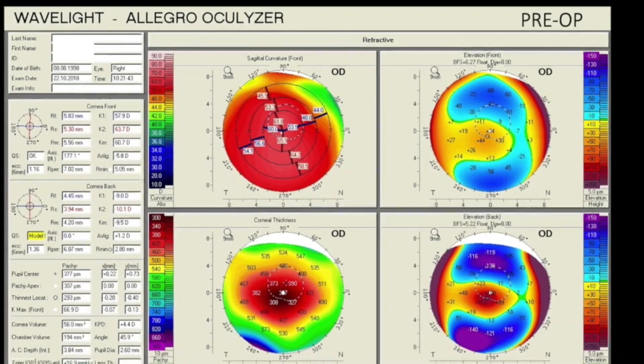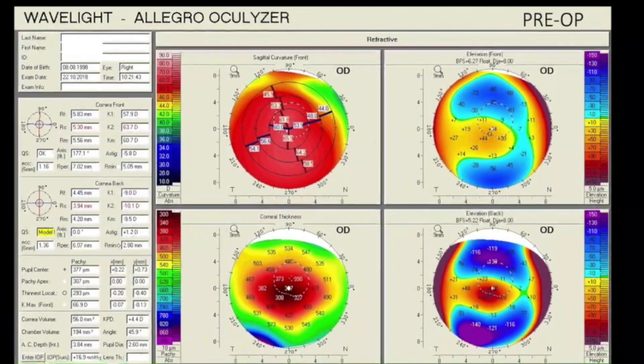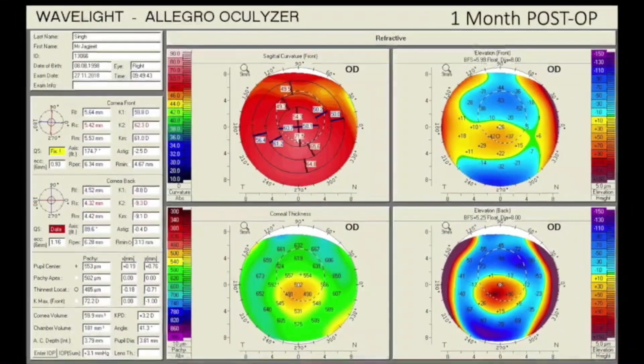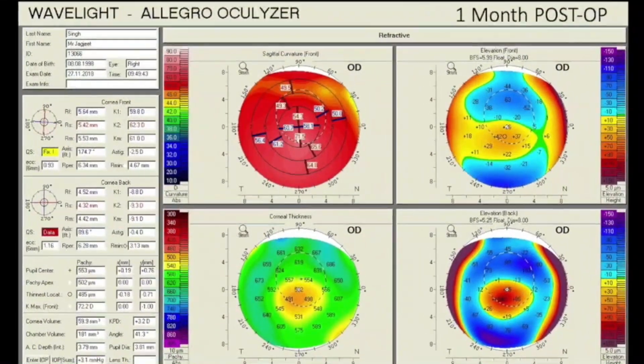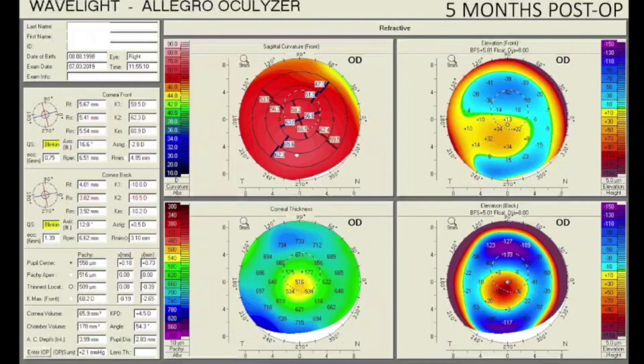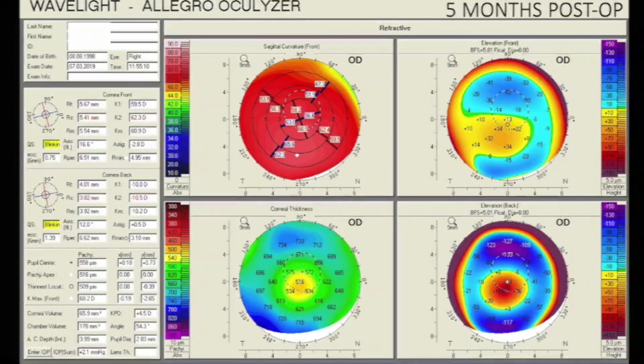OCT showed the well-placed inlay in the anterior stromal pocket. Serial tomography revealed increased corneal pachymetry in accordance with the thickness of the inlay, and stable sagittal and posterior elevation maps.